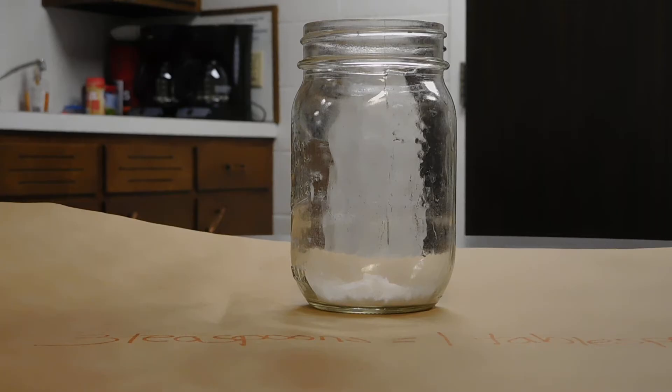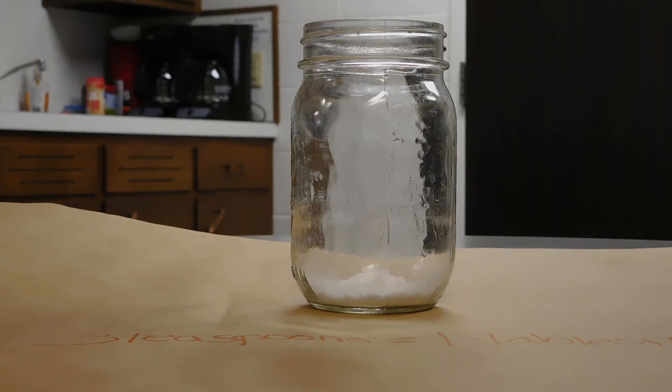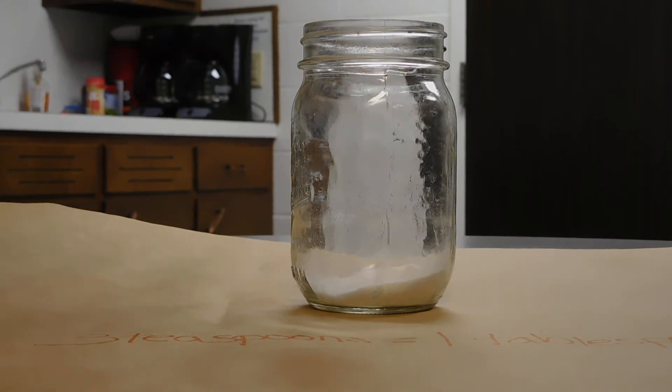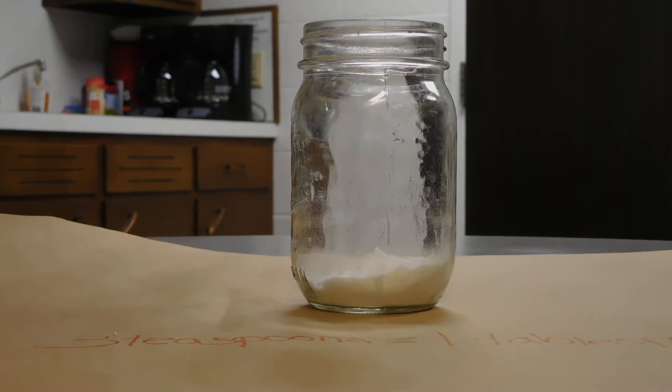So here's the procedure. We're going to put two to three tablespoons of baking soda in the jar. And since we know that three teaspoons equals one tablespoon, we will put six teaspoons of baking soda in the jar. We're going to take the tonic water and fill our jar about a quarter full.